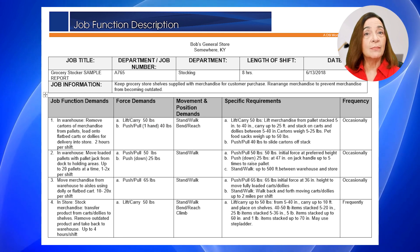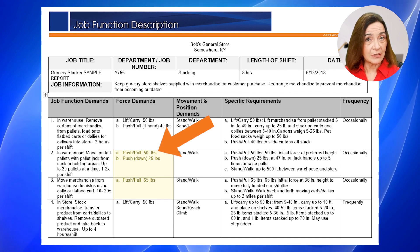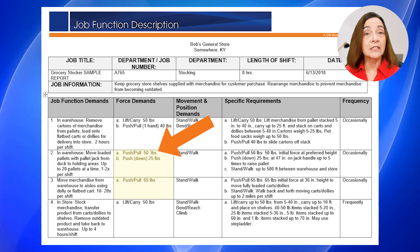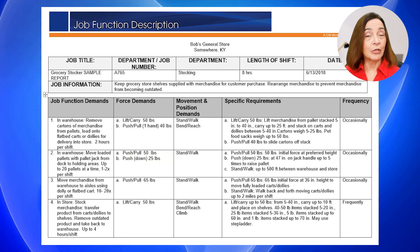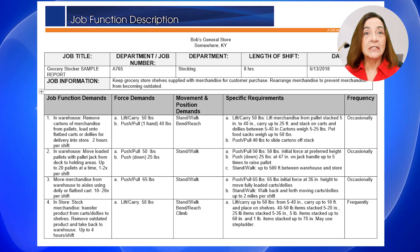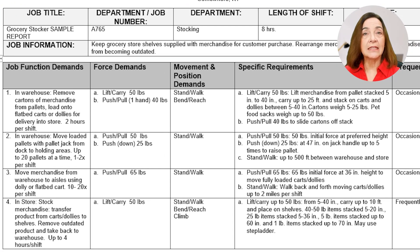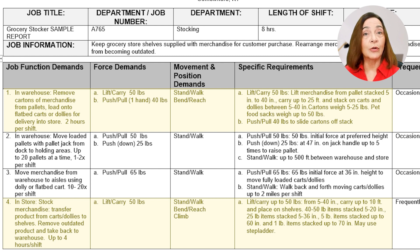Job function demands two and three don't require any lifting, although they do require push-pull force — which was not mentioned in the restriction — so you start to see where difficulty in interpretation begins. Diving a little deeper, in demands one and four, so long as pet food products are not handled, lifting does not exceed the 25-pound limit, and therefore there's potential to assign someone to those tasks as long as they don't handle the dog food bags.